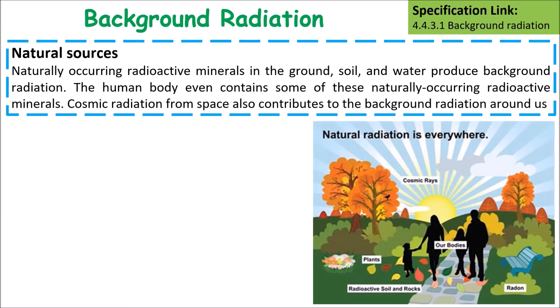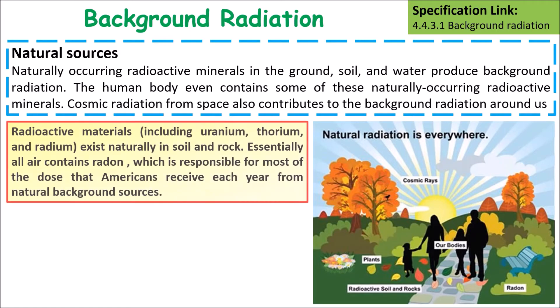Background radiation comes from the world around us. Radioactive materials including uranium form and radon exist naturally in the soil, and essentially break down to create the gas radon. All air contains a little bit of radon gas, which is responsible for most of the dose that Americans receive in a year from background radiation.